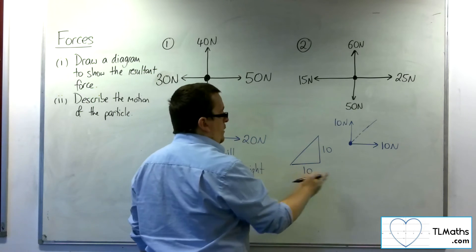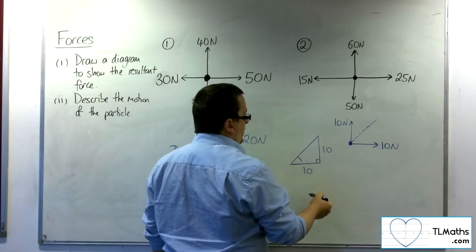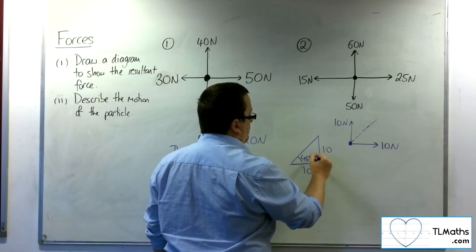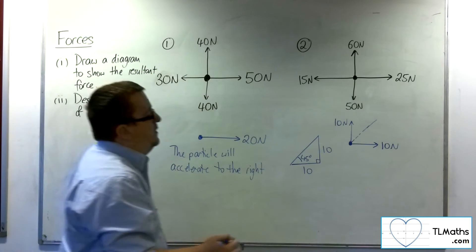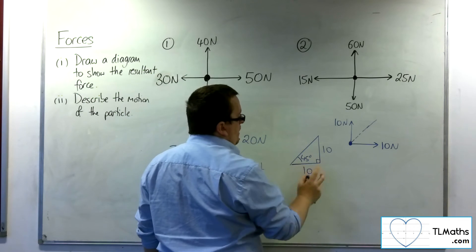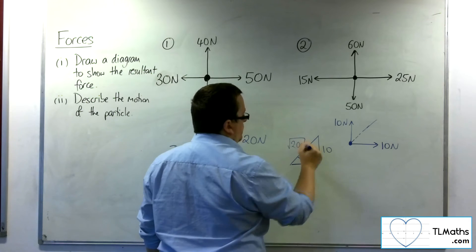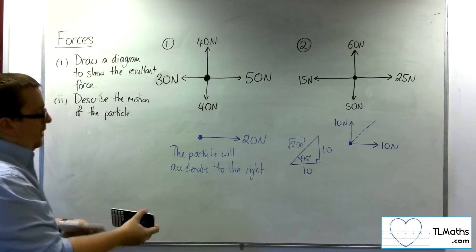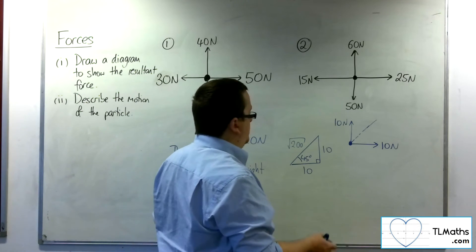So 10 along, 10 up, a right-angled triangle. Now, because that's isosceles, that's straightforward. That's going to be 45 degrees. And the magnitude of this vector will be the square root of 10 squared plus 10 squared, so square root of 200, which is 10 root 2.